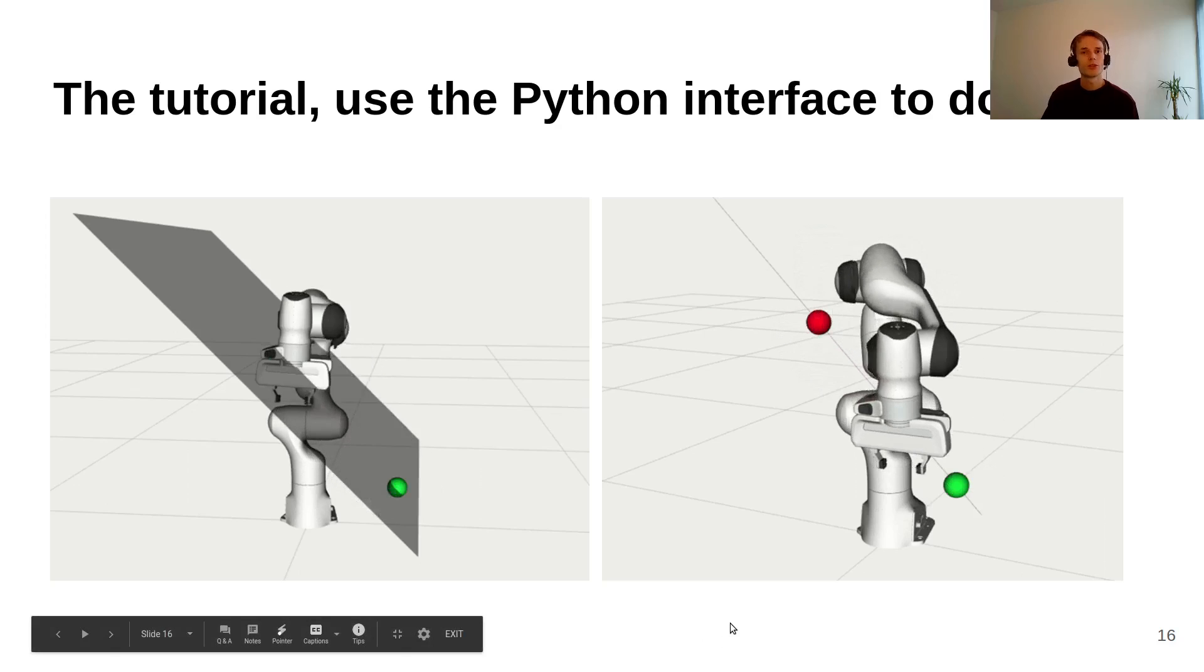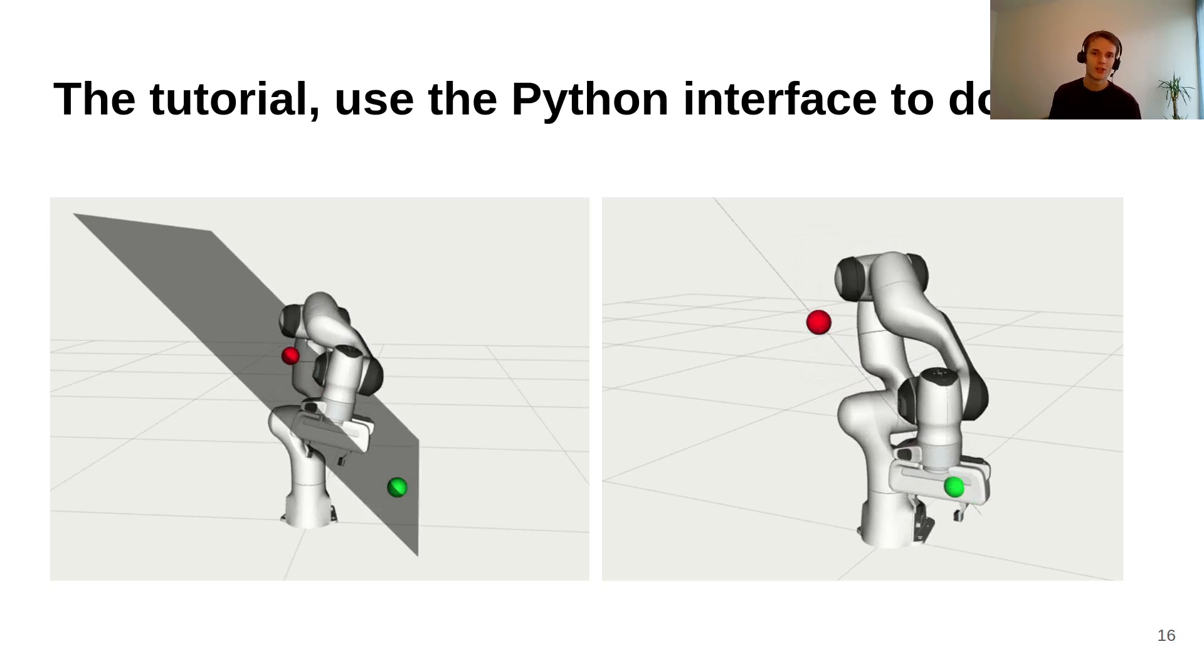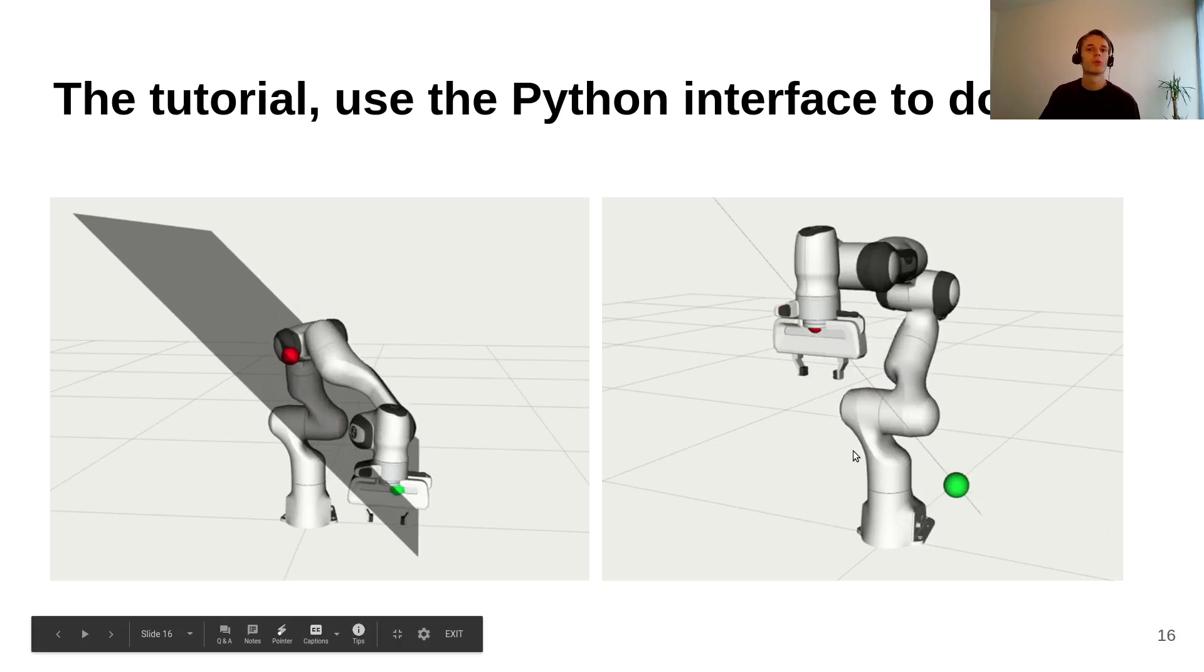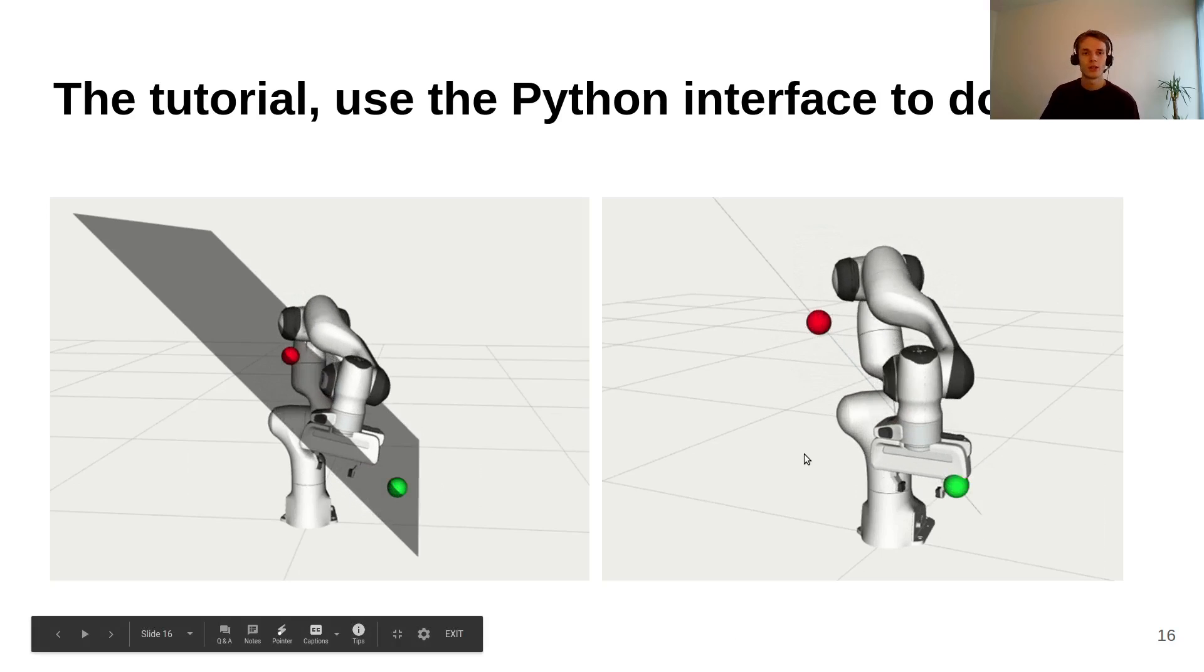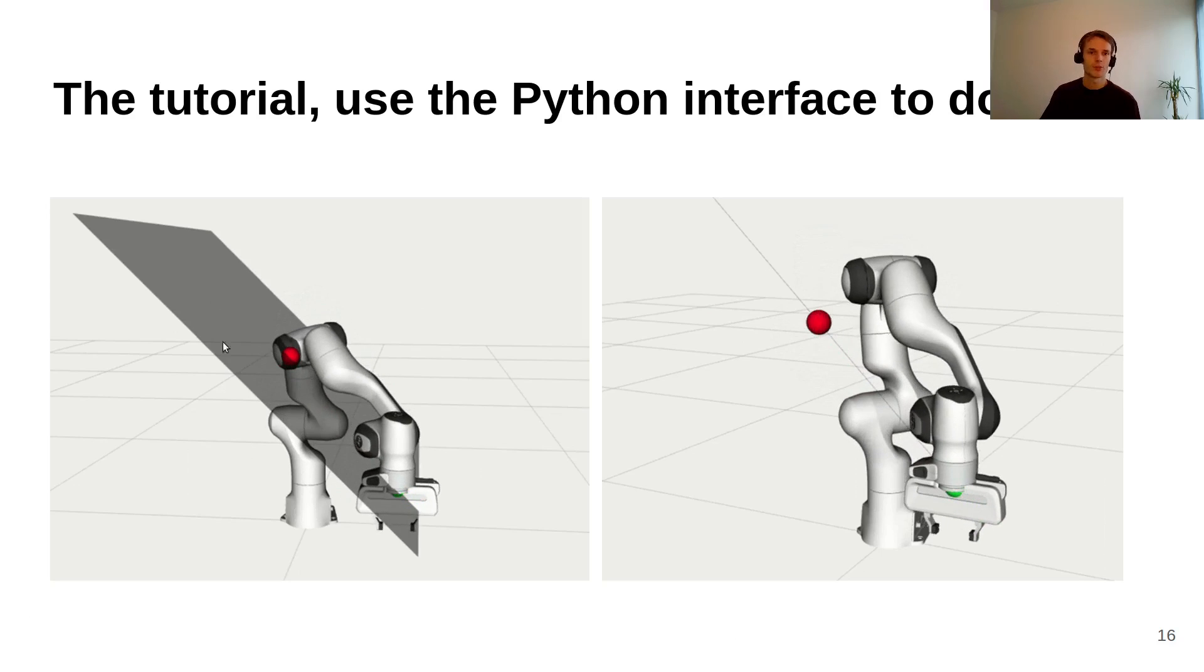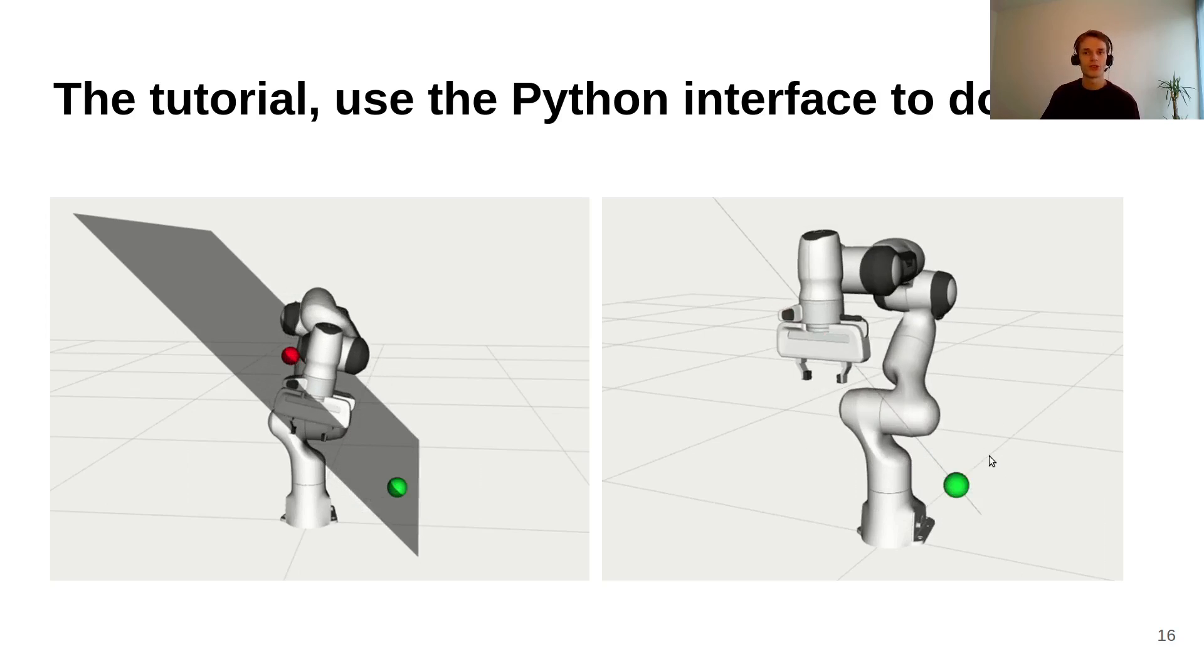Then I also implemented a tutorial using the Python interface, so this should make it really easy to get started with some simple examples. The examples in the tutorial are just for showing the basics of the interface. We can plan in a plane or plan along a line from A to B, all for the Panda robot in this case.